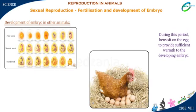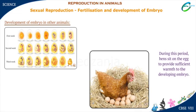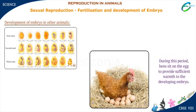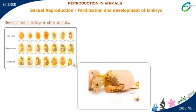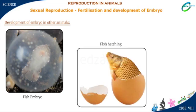During this period, hens sit on the egg to provide sufficient warmth to the developing embryo. Once the chick is completely developed, it bursts open the egg shell to come out. In the case of animals with external fertilization too, the embryos develop within the egg covering, and as soon as development is complete, the eggs hatch to give birth to young ones.